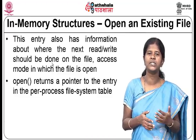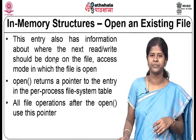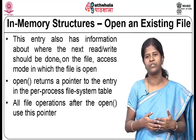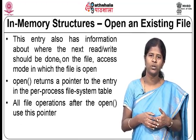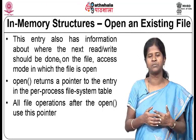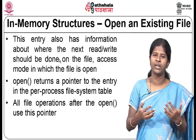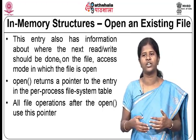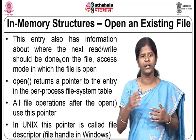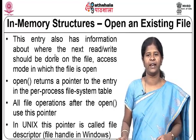A per-process open file table entry is made to point to the system-wide open file table. The open call returns a pointer to the entry in the per-process file table. All subsequent file operations use this pointer to access the per-process file table and thereby the system-wide file table entry with the FCB. In Unix this pointer is called a file descriptor; in Windows it is called a file handle.